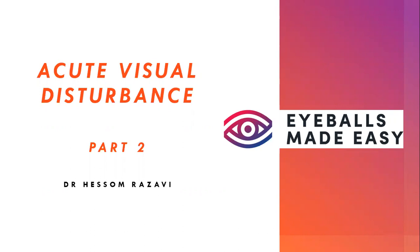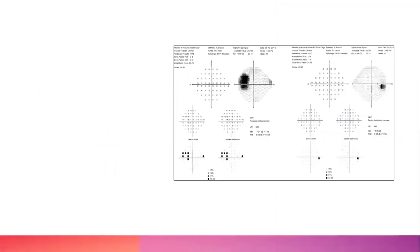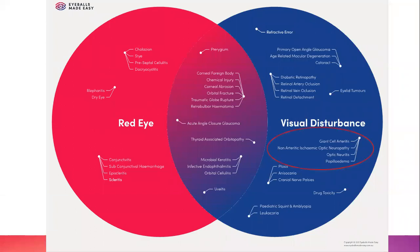Let's get on with the lecture on acute visual disturbances. I'll give an overview at the start of what I'm talking about, then an approach to the history and exam of this group of conditions, and then we'll go through the conditions one by one in the second half of the talk. The overview is that we're focusing on optic neuropathies today, which are not common but are serious when they happen.